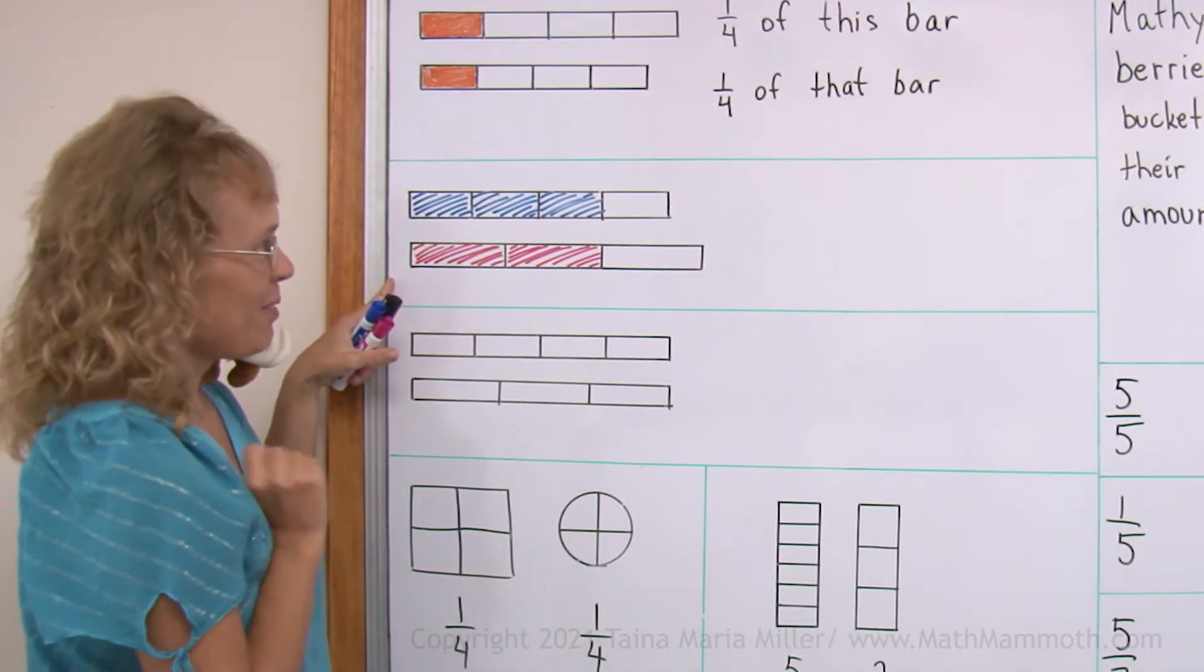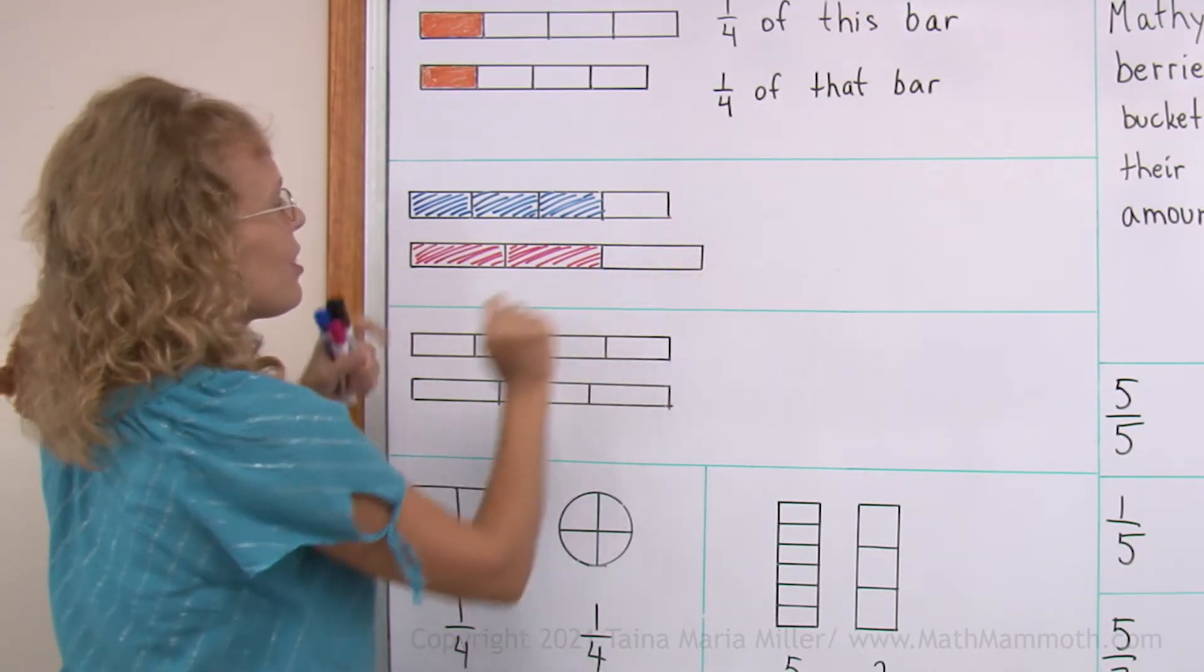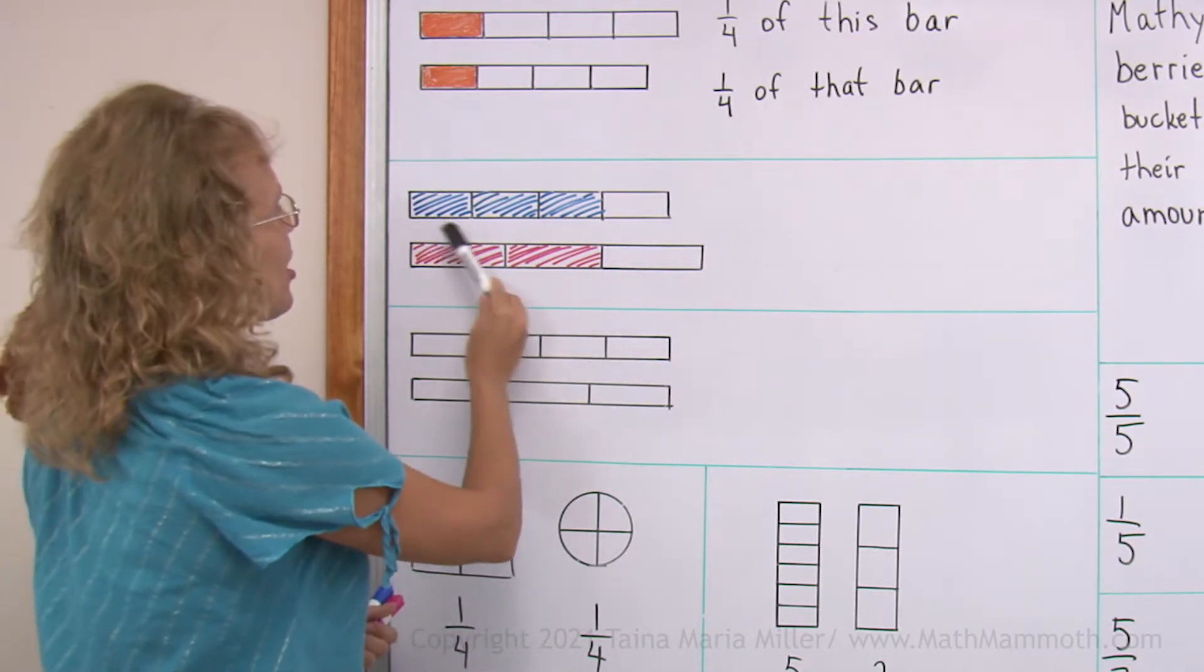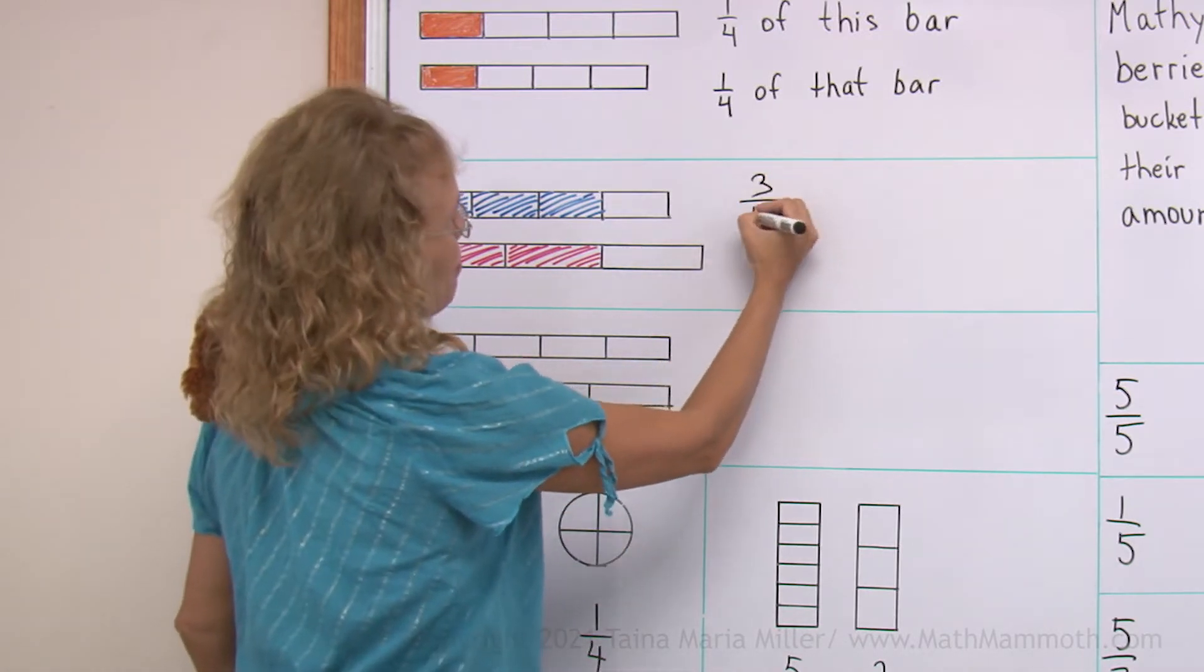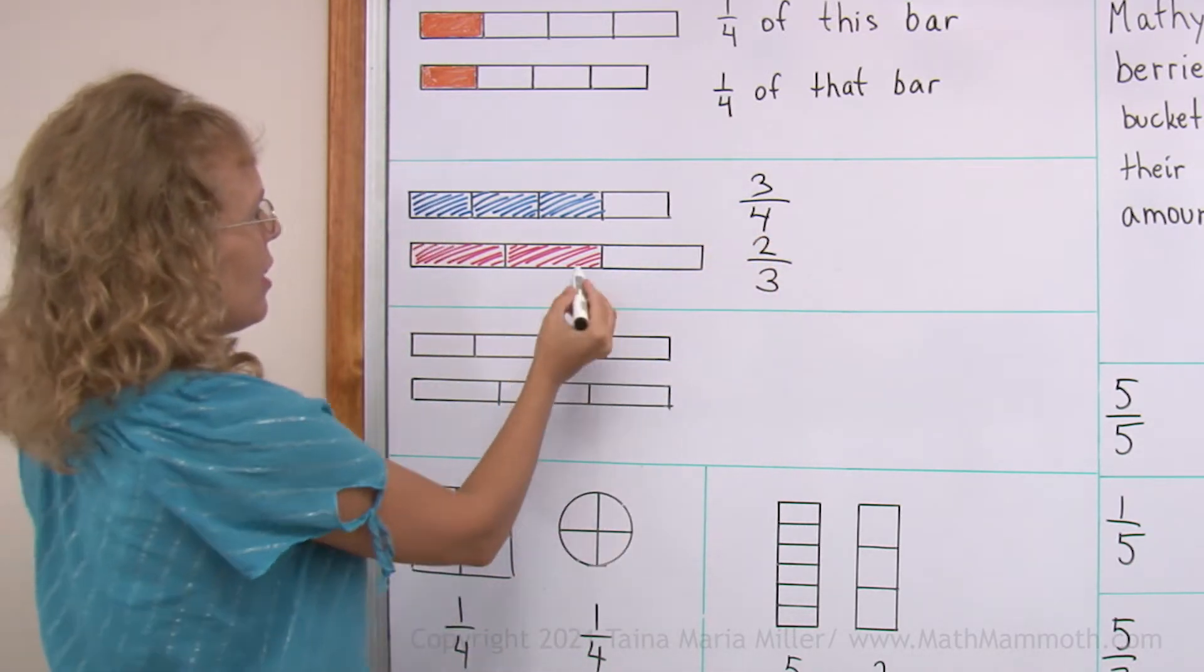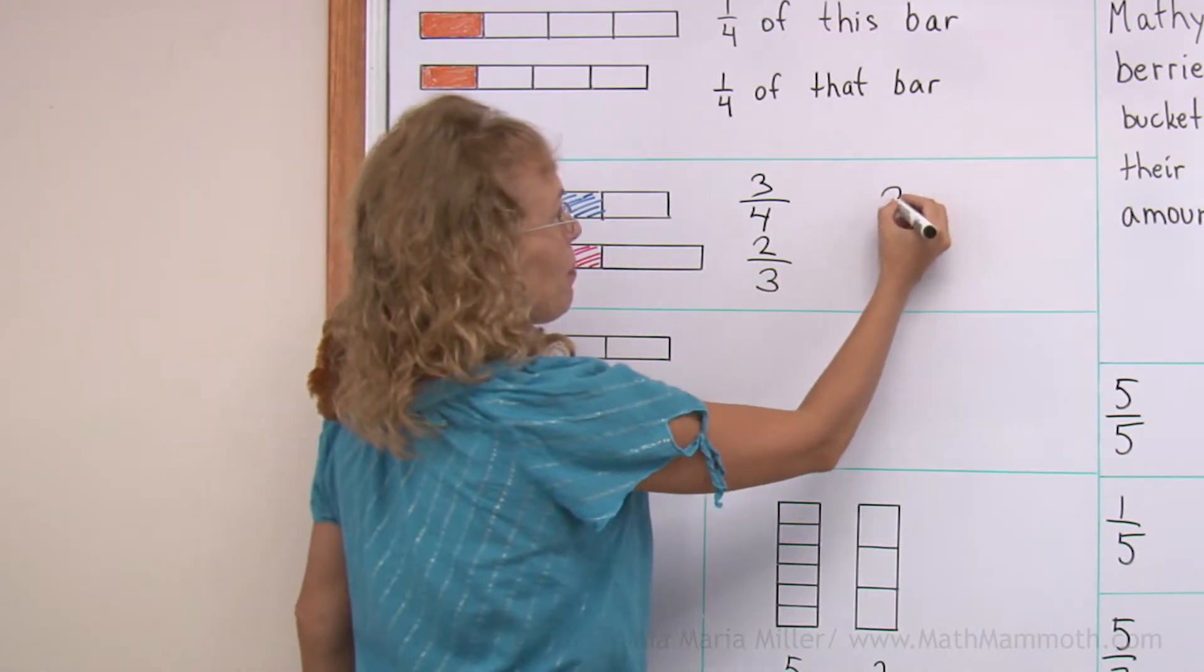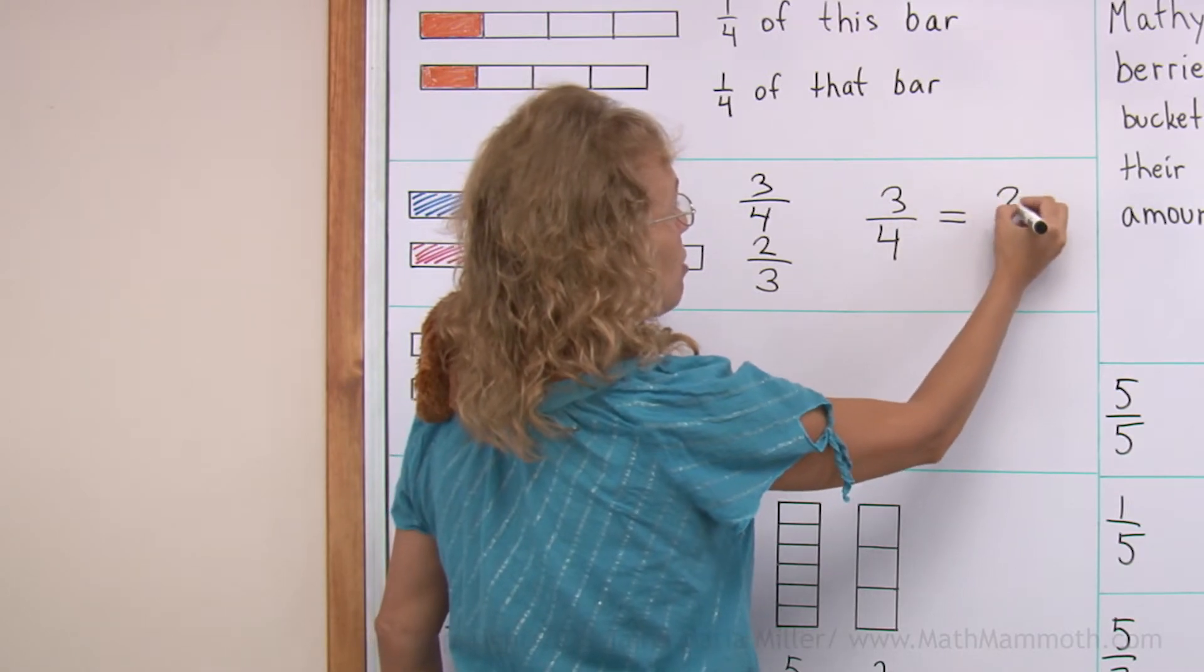We see the same problem here. We have two fraction bars but they are not the same length. So my first fraction bar here is showing three-fourths, and this one is showing two-thirds. And they look like they are the same amount.